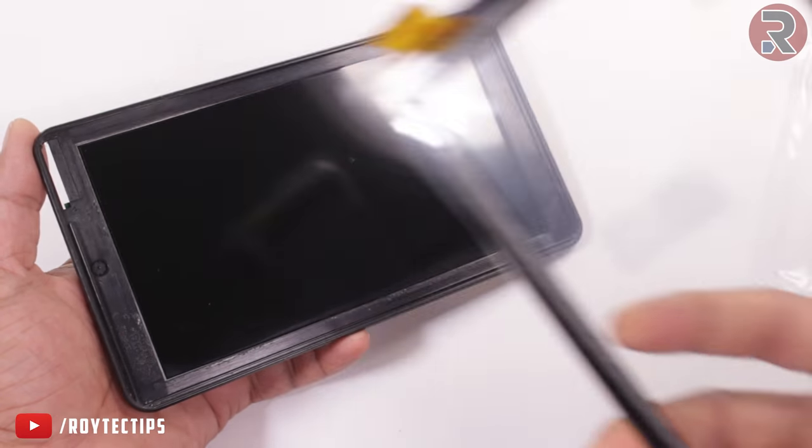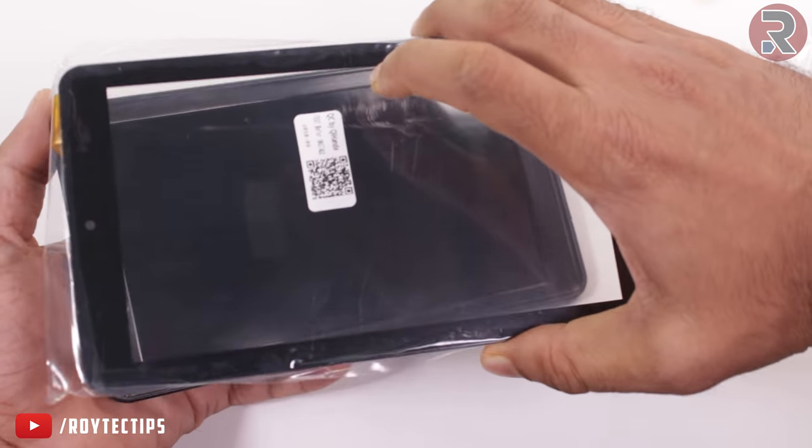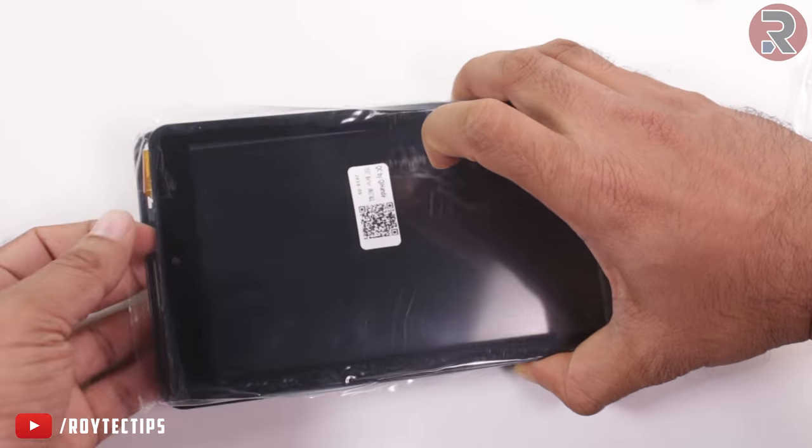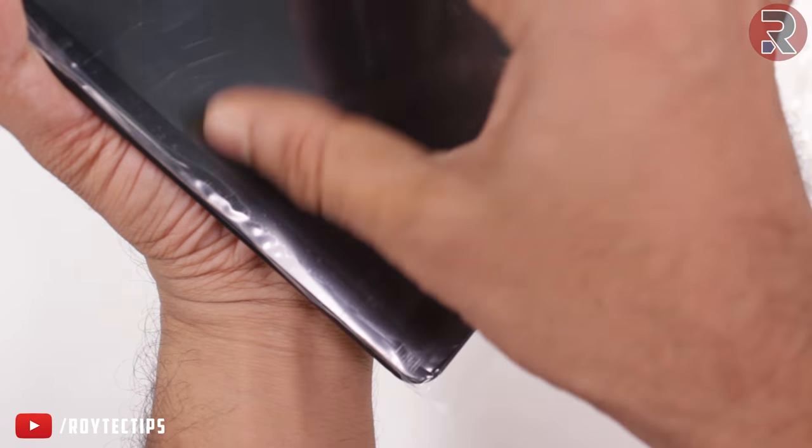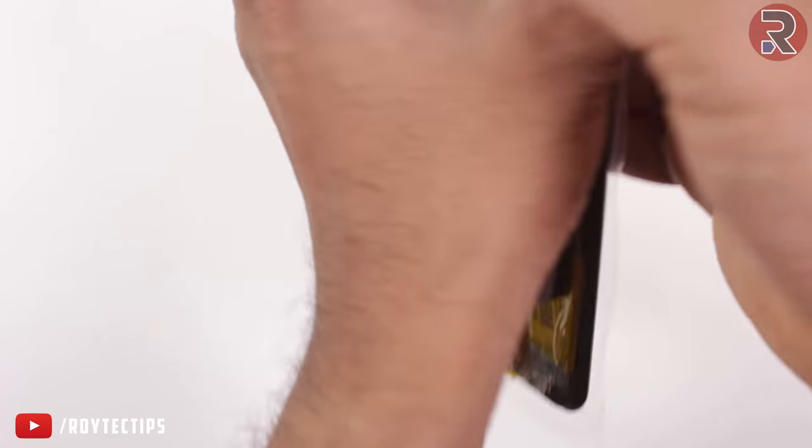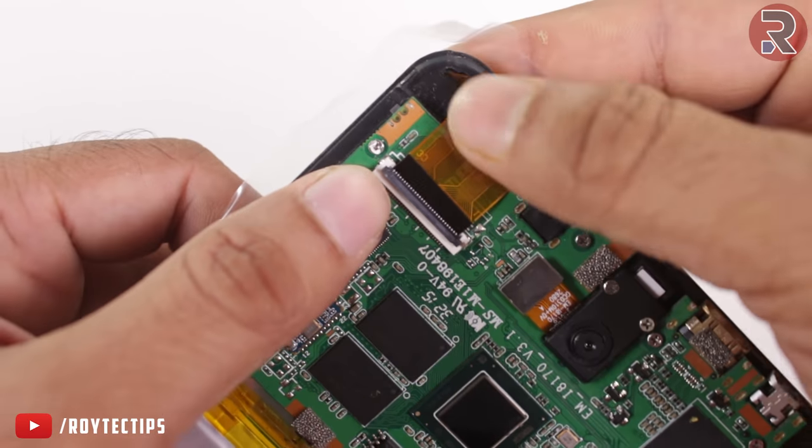We will properly align the digitizer with the LCD screen so the touch works perfectly and put some pressure so that the adhesive properly attaches with the tablet. Next, connect the digitizer ribbon with the motherboard.